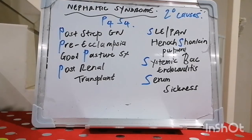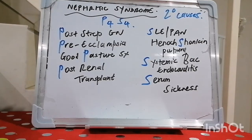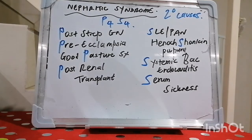Clinical manifestations of glomerular diseases range from asymptomatic proteinuria through to nephritic syndrome, asymptomatic hematuria, recurrent gross hematuria, acute nephritis, rapidly progressive glomerulopathy, pulmonary renal syndrome, and chronic renal failure.